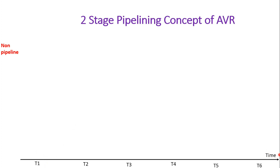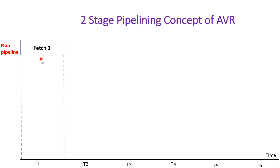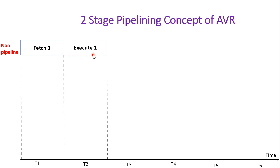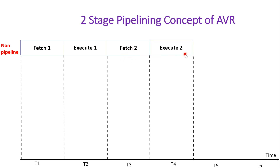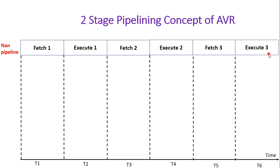Here you can see a timeline — clock cycle 1, clock cycle 2, clock cycle 3, and so on. Some older controllers support non-pipelining architecture. In non-pipelining, the microcontroller fetches the first instruction in T1 stage, then executes it in T2 stage. Then in T3 it fetches the second instruction, and in T4 it executes it. Again fetching and execution of the third instruction follows. Notice that in T2 the microcontroller cannot do anything except execute the already-fetched instruction, so a considerable amount of time is wasted.